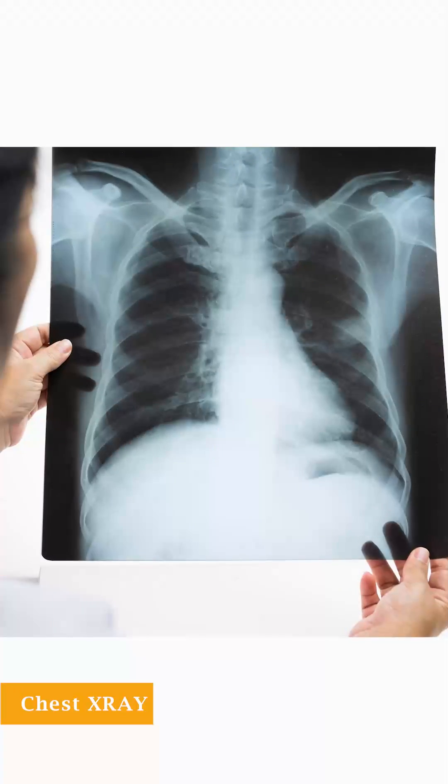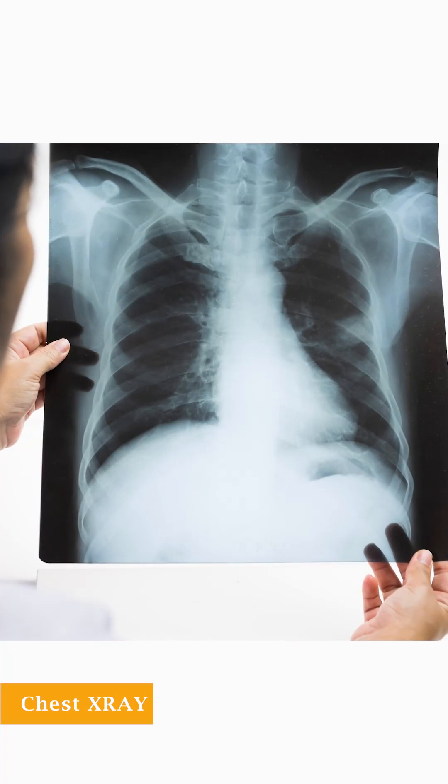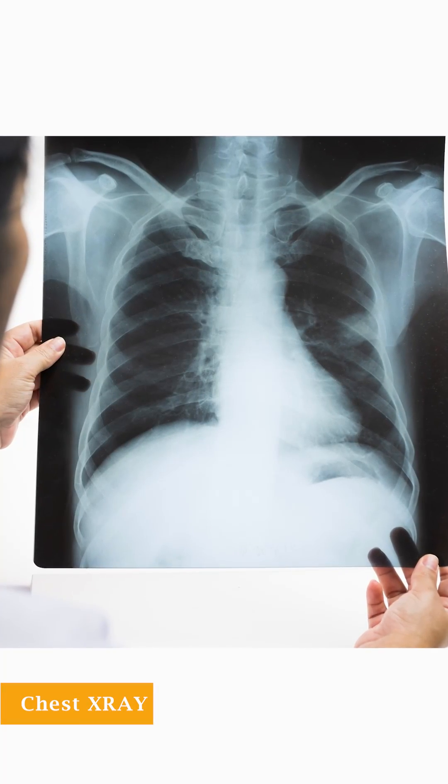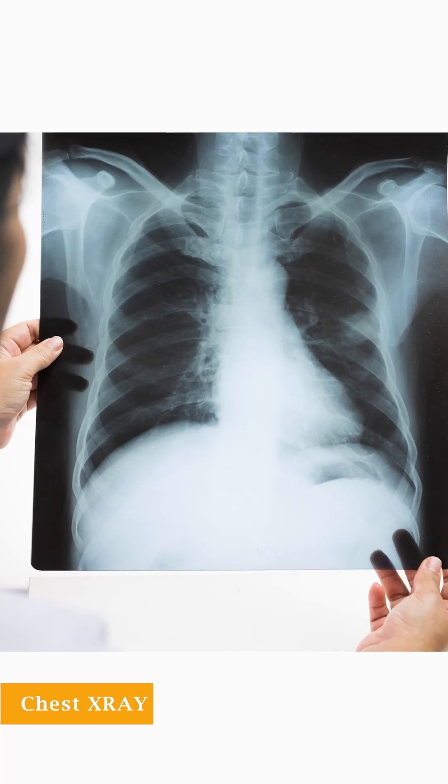Whenever you have a person whom you suspect to have an ILD, the first thing is a chest X-ray. But many times the chest X-ray will be normal in an early ILD. For an ILD to be evident on chest X-ray, it has to be a little advanced. So to diagnose an ILD early, it is always important to get a good quality HRCT of the chest.